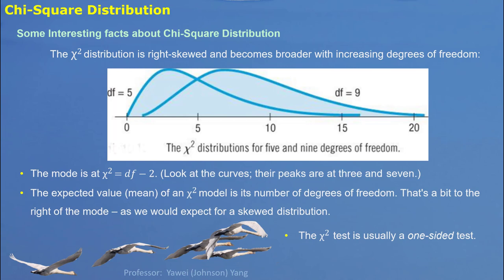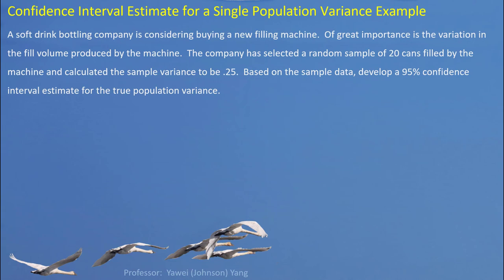The chi-square random variable's expected value is exactly the number of degrees of freedom. This is another interesting fact that will be convenient in some situations. When we use chi-square test statistic to perform tests, the test is normally a one-sided test, though occasionally we can still do a two-sided test. Here is an example.